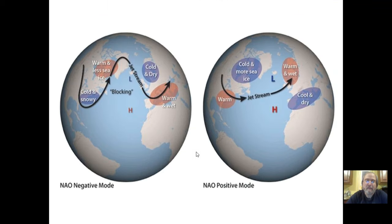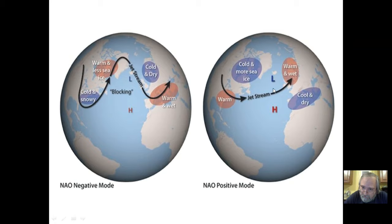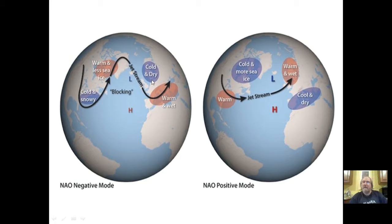This next diagram shows the blocking pattern: in the negative mode it prevents pressure systems from moving normally, the jet stream dips down bringing cold, snowy conditions to southeastern North America and warm conditions with less sea ice in the northwest Atlantic. Cold and dry over Scandinavia and northern Europe, warm and wet over southern Europe and the Mediterranean. In the positive mode, the jet stream is more direct — more zonal — whereas the negative mode is more meridional, dipping down.